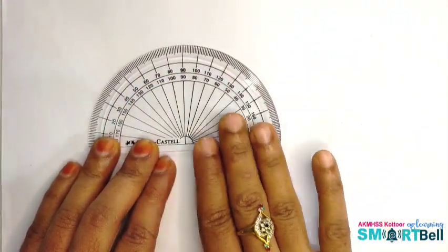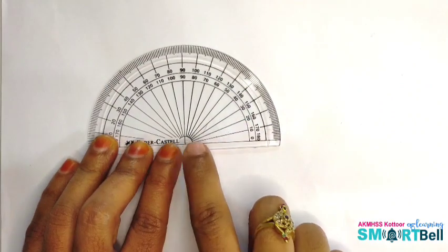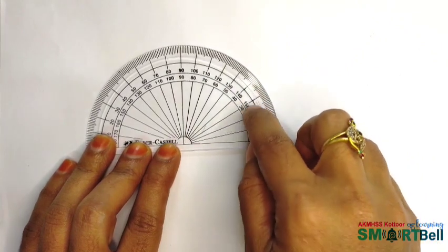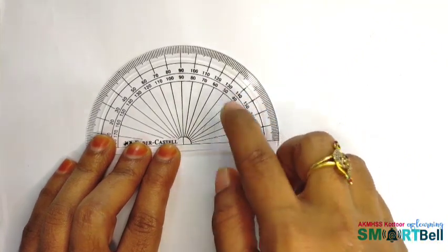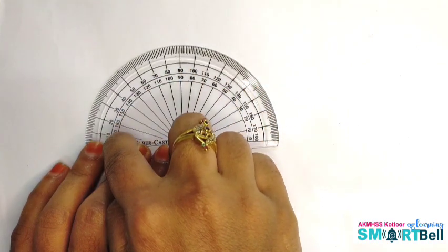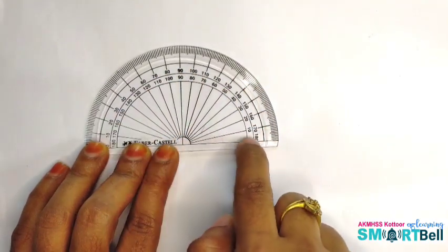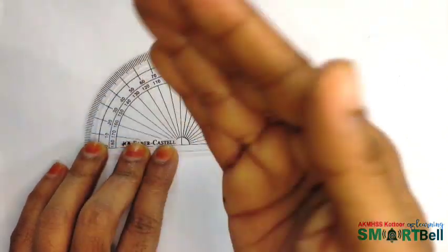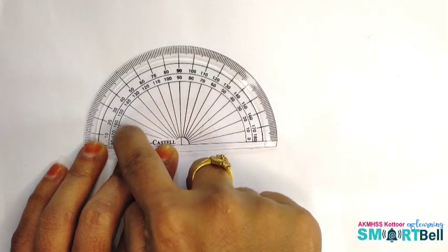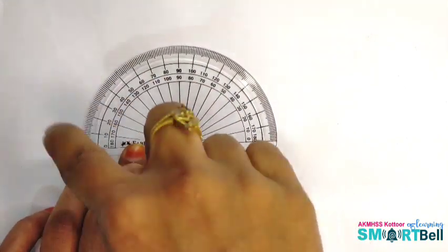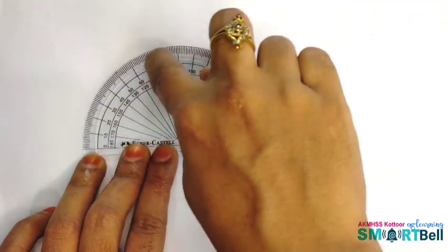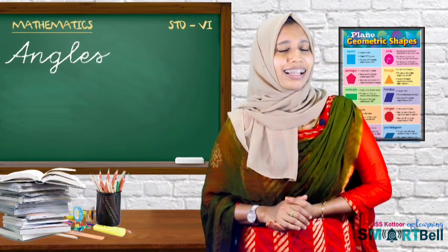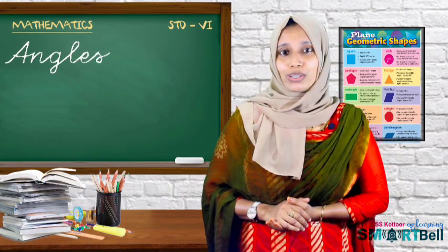Okay children, this is our protractor. At the end of each line, there are two numbers, one below the other. These numbers are the degree measures of angle made by this line with the bottom line marked zero. When we measure angles on the right, we use bottom numbers. When we measure angles on the left side, we use the top numbers. Do you get any idea? Let's make it clear, I can show you some examples.